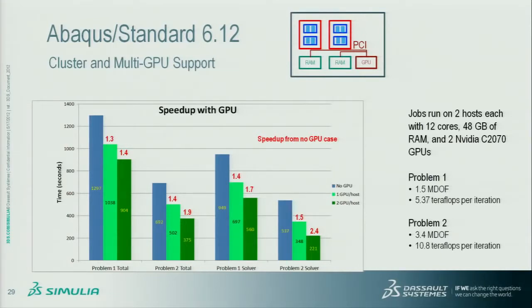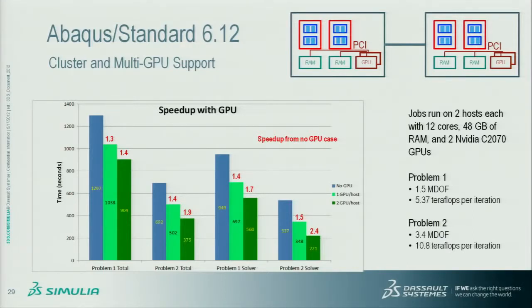With Abacus 6.12, we've continued to expand GPU coverage for Standard. The 6.11 offering allowed use of one GPU on one server, which is effective for certain problem classes but keeps you from doing very large problems. With 6.12 we've expanded support for multiple GPUs on a server and for using GPUs in a cluster. As you put more x86 cores in a box, you have to have more GPU capacity to offload compute — otherwise the x86 cores will swamp a single GPU.